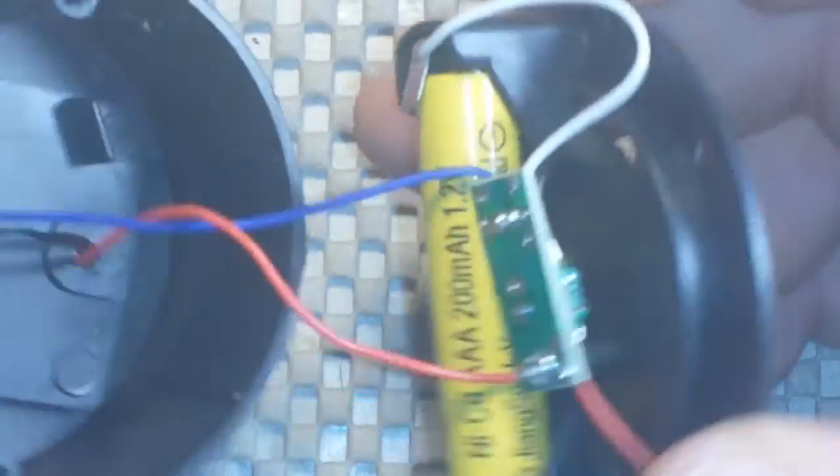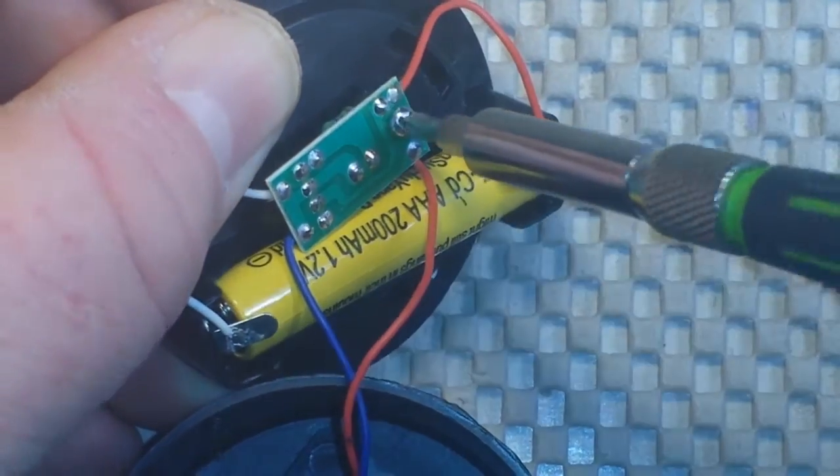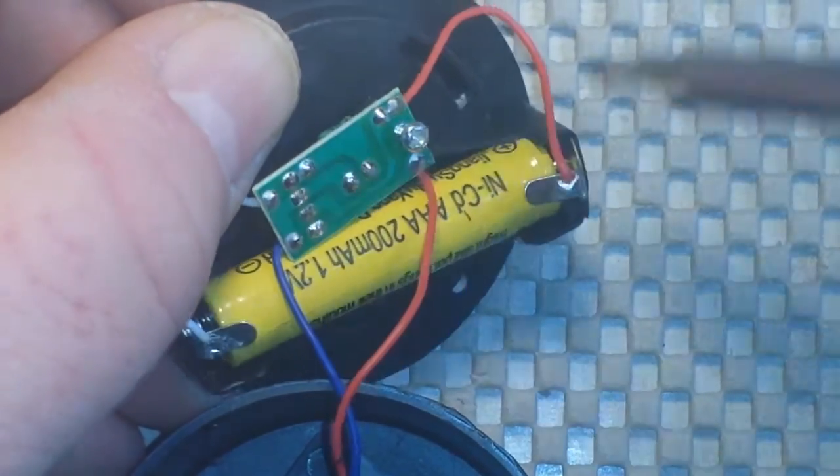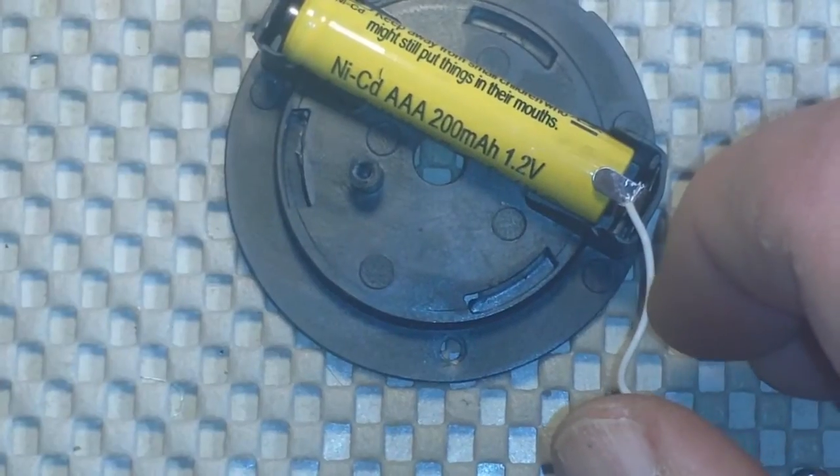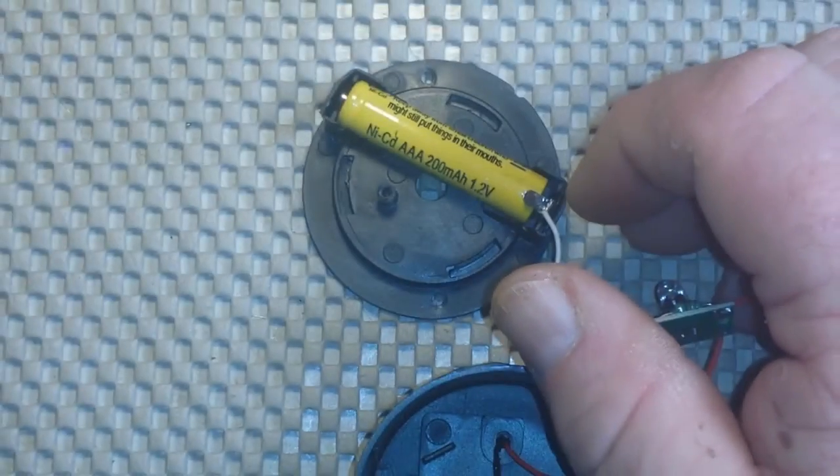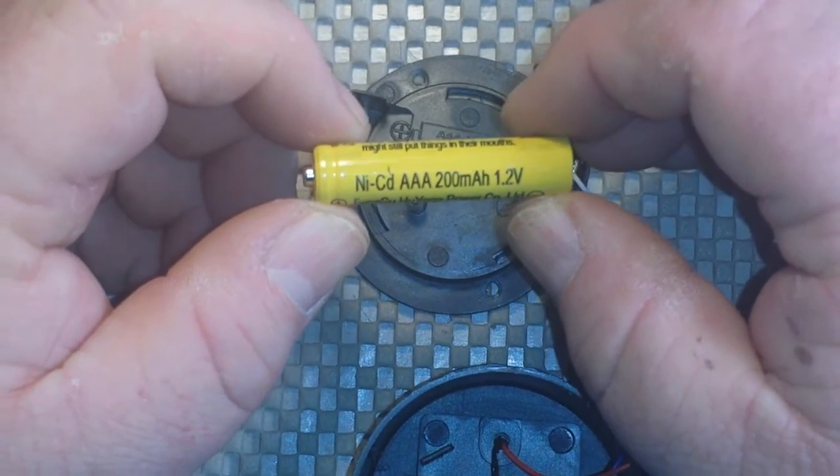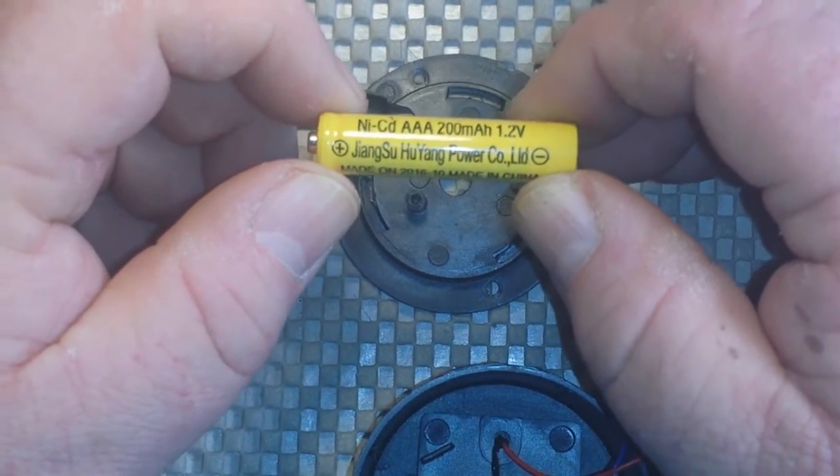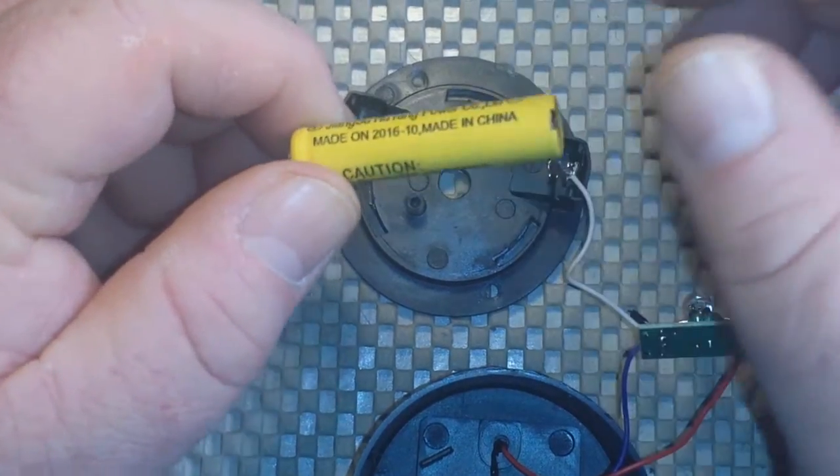Let's start by pulling the battery out of here. Let me zoom out a little bit so I can keep more of this in frame. We start off with a AAA NiCAD 200 milliamp hours from the Jiangsu Hu Yang Power Co. Limited. Made in China. What do you know?